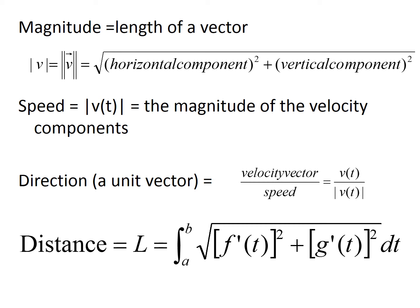The magnitude is the length of the vector. It's also the speed. If you want to find the speed of the vector, you find the magnitude. This is the x component squared plus the y component squared.